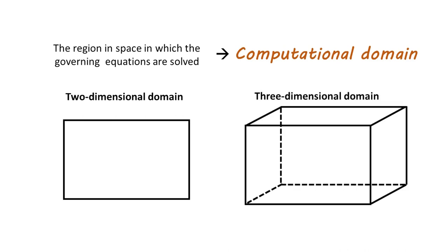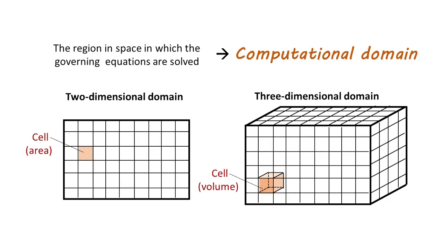During meshing, the volume of the domain is being divided into many small elements. These elements are called cells. For two-dimensional domains, the cells are areas, while for three-dimensional domains, the cells are volumes.